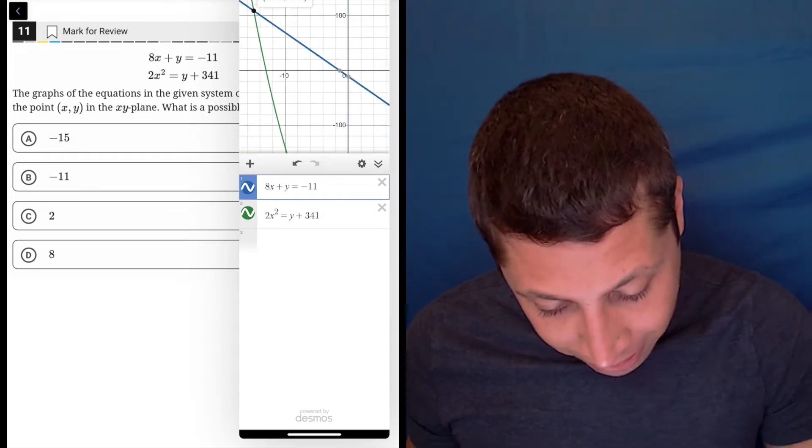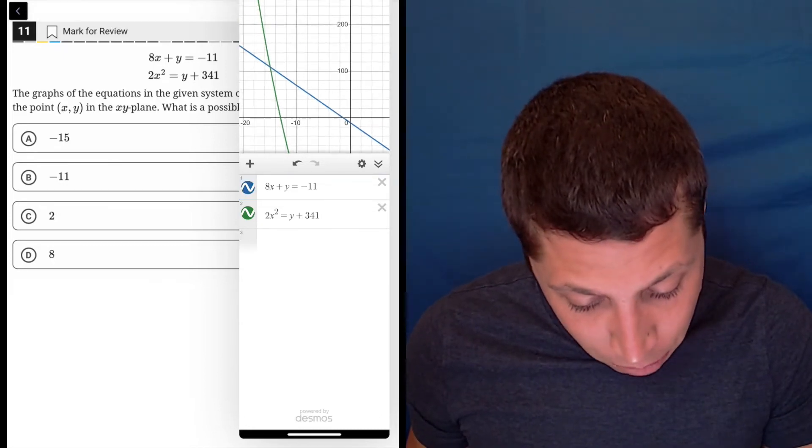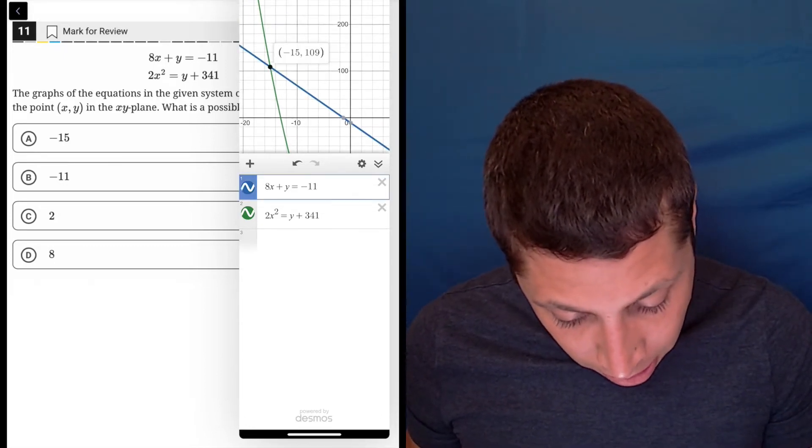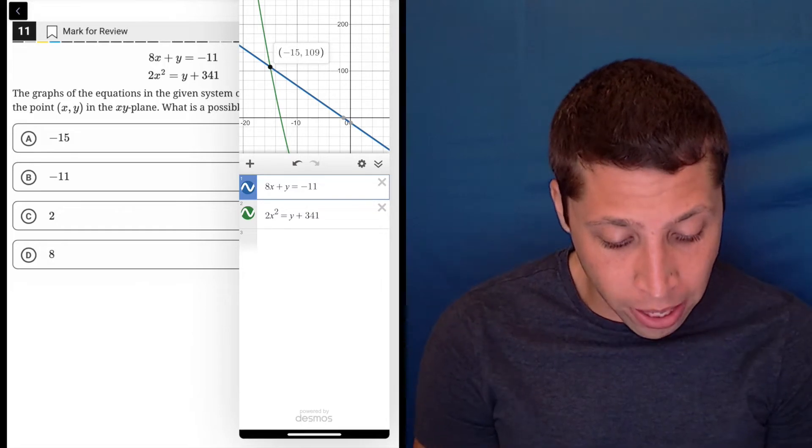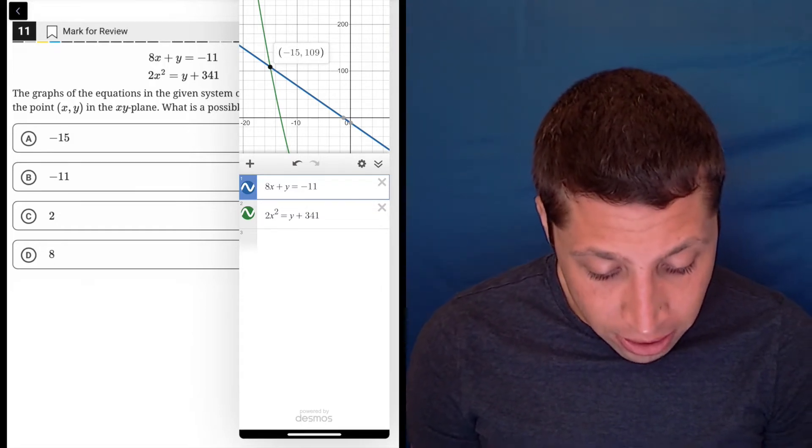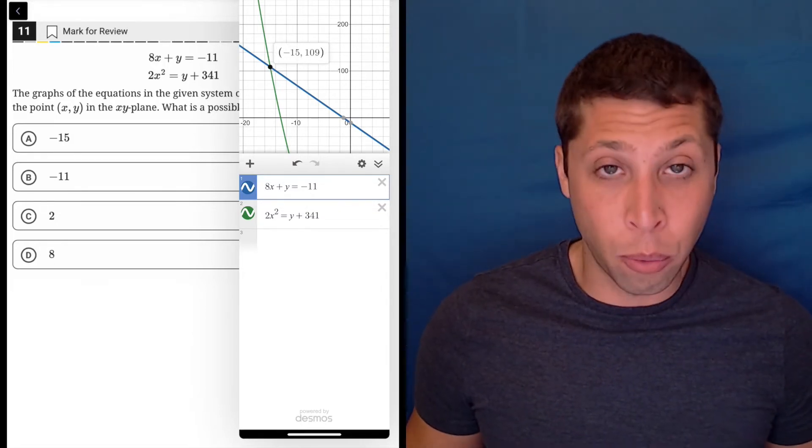Let's see, this is an intersection point. If I tap it, it comes up. Let me move that down so you can see it. There it is. There's my intersection point, negative 15, 109. So does that work? Yeah.